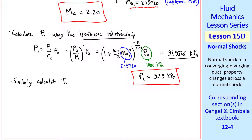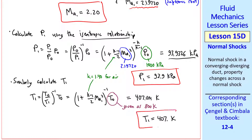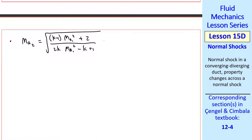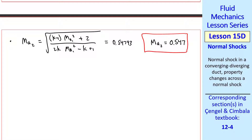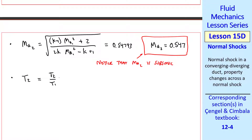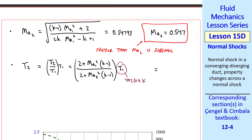Similarly, we calculate T1 using the known T0 over T1 equation for isentropic flow. T0 was given as 800 K. Plugging in Mach number 1 and K equals 1.40 for air, I get T1. Now let's use the equation for Mach number 2. Plugging in Mach number 1 and K, I get 0.54743, so I report Mach number 2 as 0.547. Notice that Ma2 is subsonic as it must be.